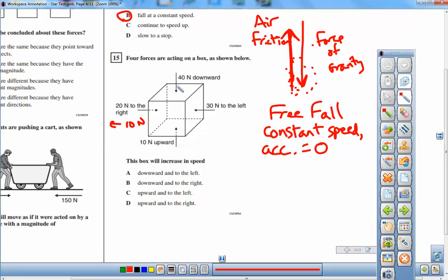40 down, 10 up, you get a net force of 30 going down. So, 30 going down. So, it's going to head down and to the left. With 30 newtons down, 10 to the left. Down and to the left is all it's asking for here. Letter A.